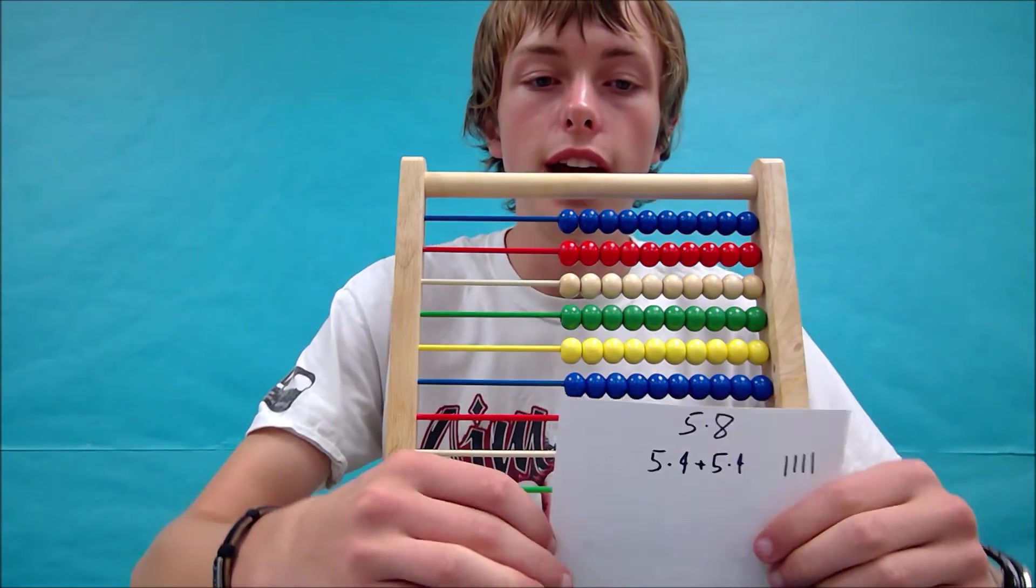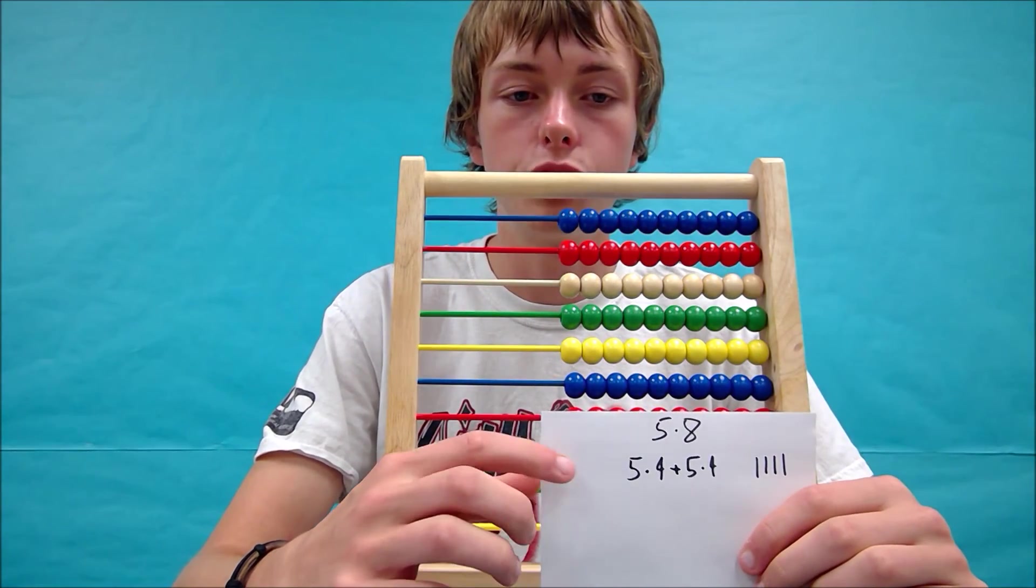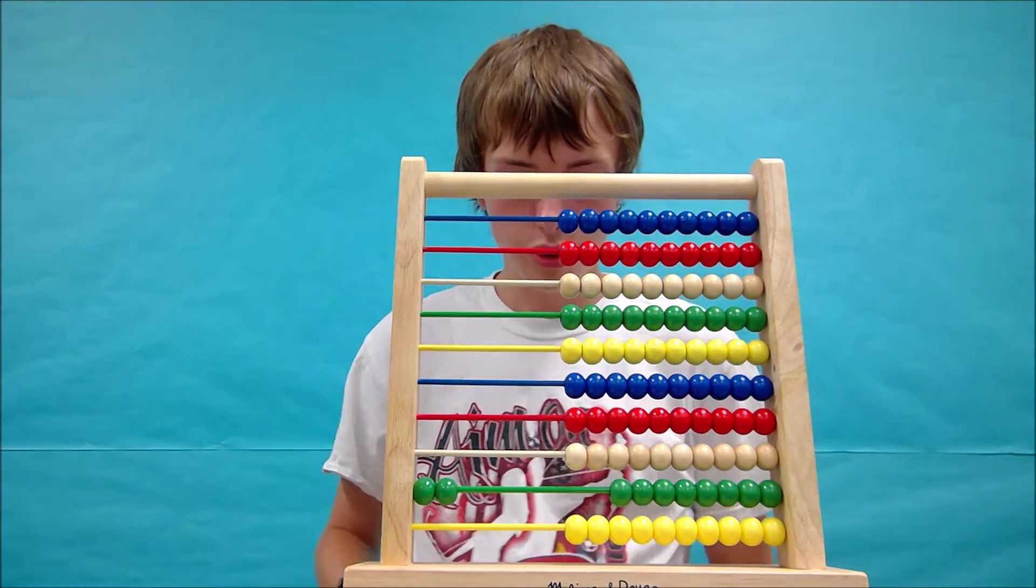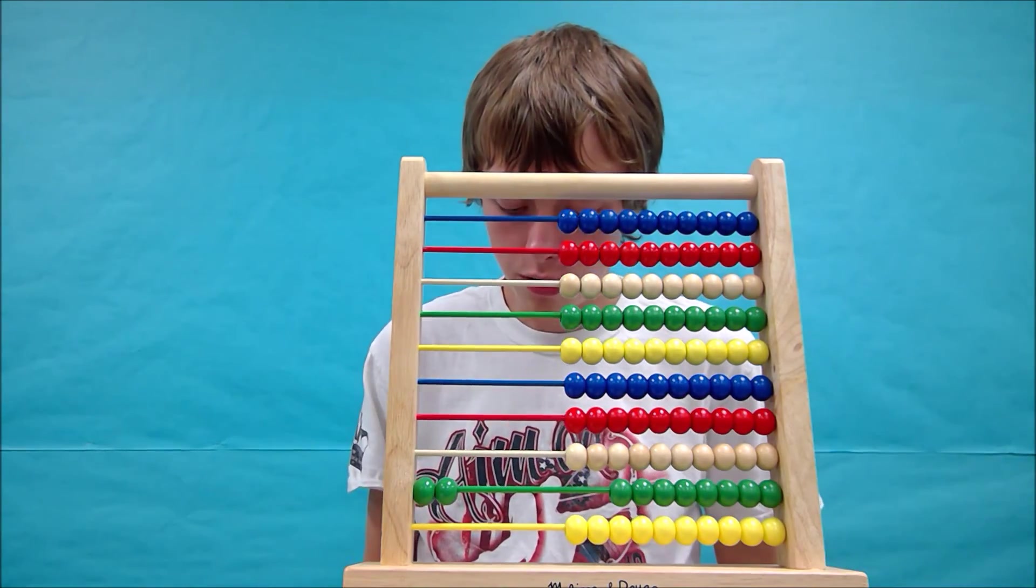At this point, we have figured out half of 5 times 8, which is 5 times 4, which is 20. I'll show you how it would look.